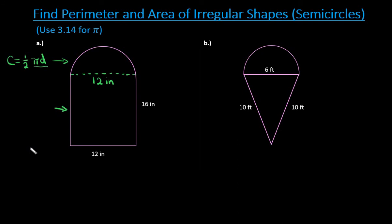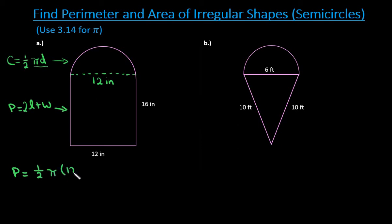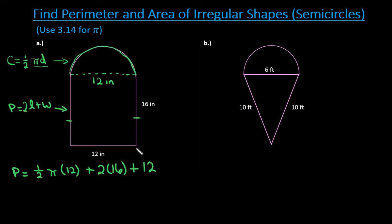Because we're finding the perimeter, we don't go all the way around the bottom of the semicircle — we just do two times the length plus the width. So the perimeter is: one half times pi times the diameter of 12, plus two times 16 (the two vertical sides), plus 12 for the bottom. We go around the semicircle first, then down one side (16), across the bottom (12), and back up the other side (16).